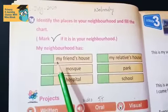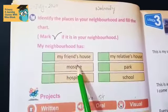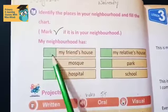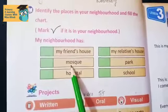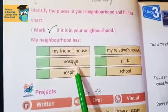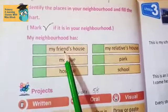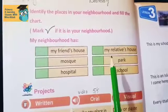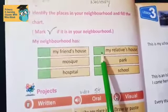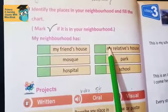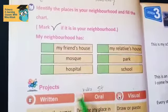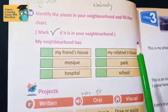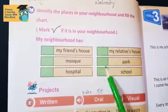Now let's see what we have. First: my friend's house. You have to make a tick over here. Same goes for hospital or my relative's house. Also, park and school. If any of these places are in your neighborhood, you have to make a tick next to them.